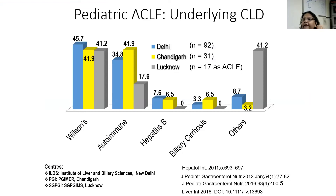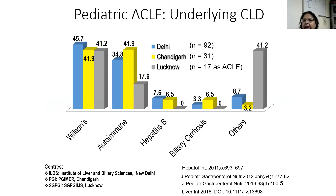Looking at the underlying chronic liver diseases in pediatric ACLF, Wilson's disease is the commonest one. Next comes autoimmune liver disease, and the other causes follow after that. This has been seen in almost all data discussed in the literature.